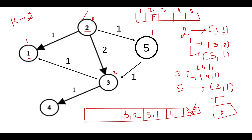We pull out the element with the lowest cost. Both (1,1) and (5,1) have equal cost, so hypothetically (1,1) gets pulled out. Node one was not visited, so we mark it visited and update total time to the maximum of zero and one, which is one. There are no outgoing edges from node one, so no further insertions are made.